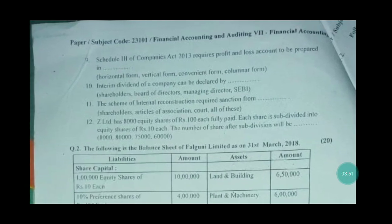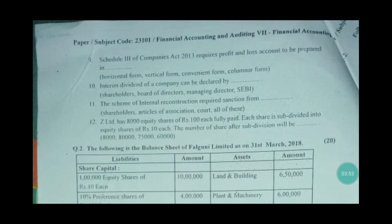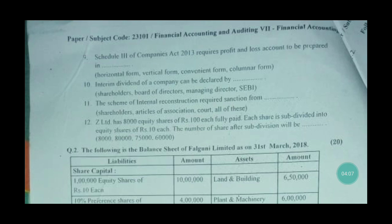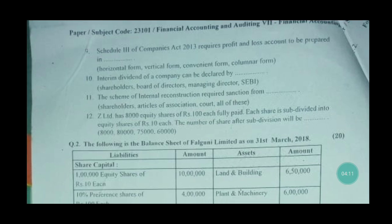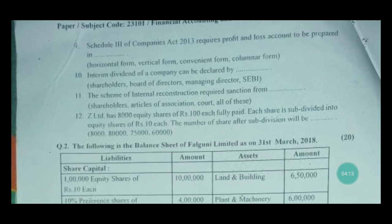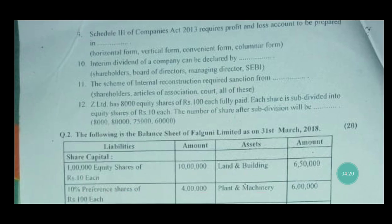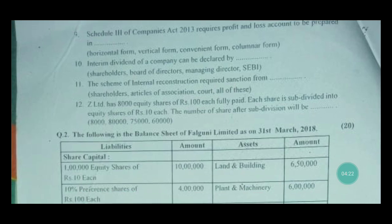Schedule 3 of the Companies Act 2013 requires the profit and loss account to be prepared in horizontal, vertical, convenient, or columnar format — the answer is vertical format. Interim dividend of the company can be declared by shareholders, board of directors, managing director, or SEBI — the answer is board of directors. The scheme of internal reconstruction requires sanction from shareholders, articles of association, court, or all of these — the answer is all of these.